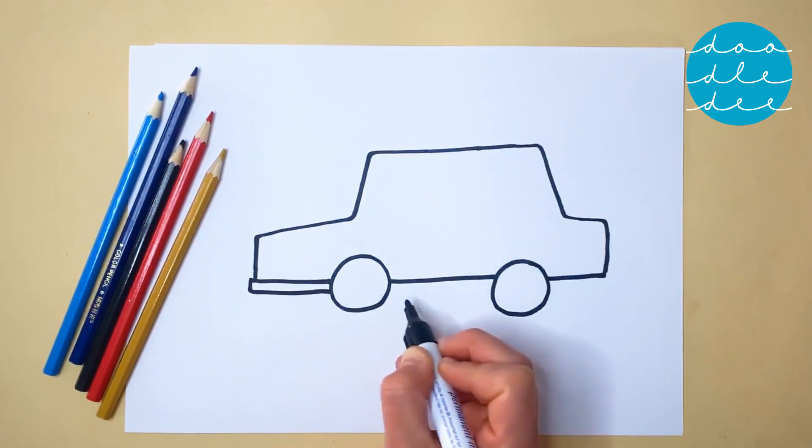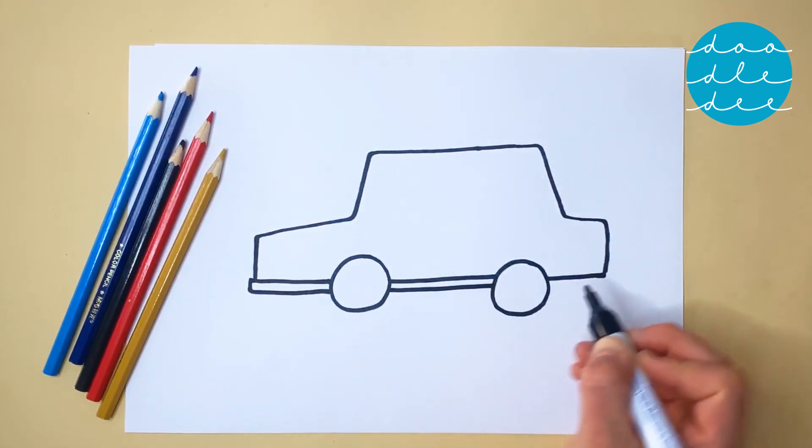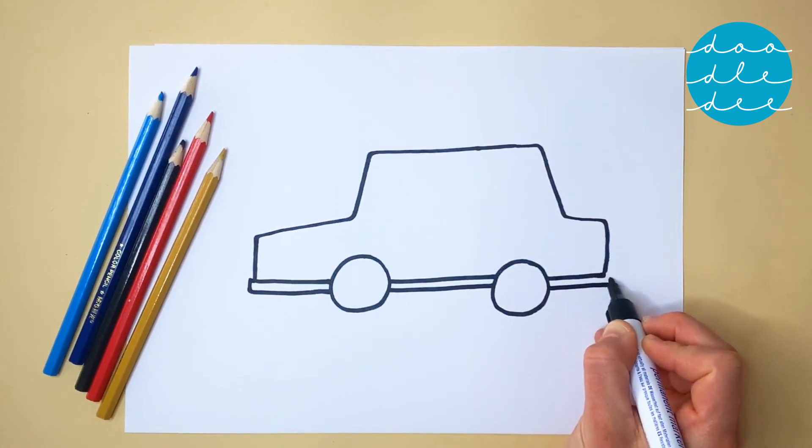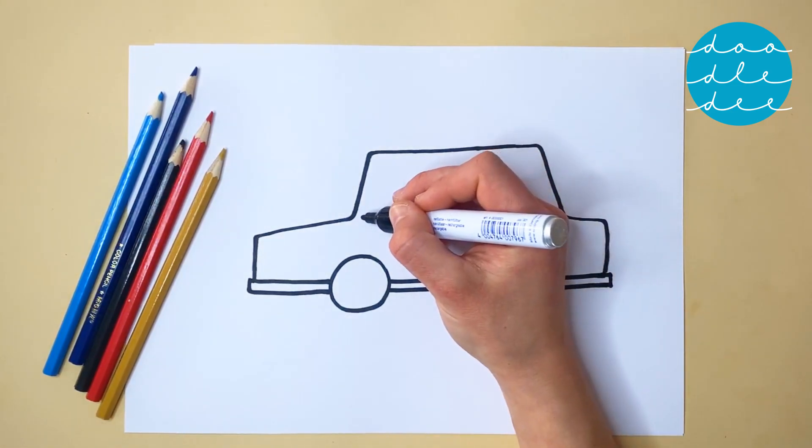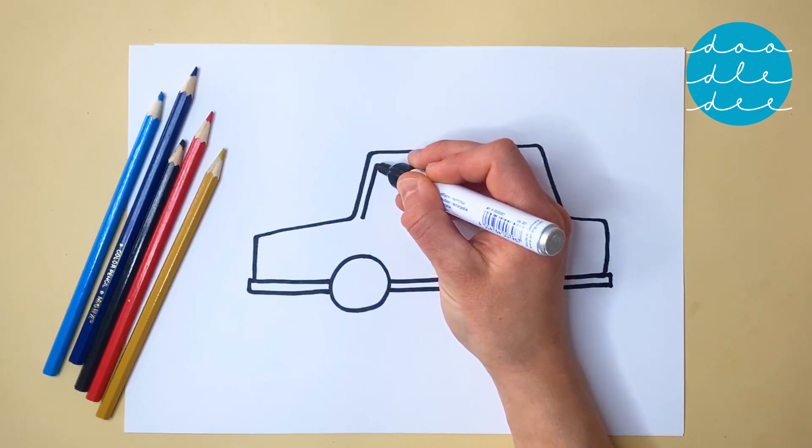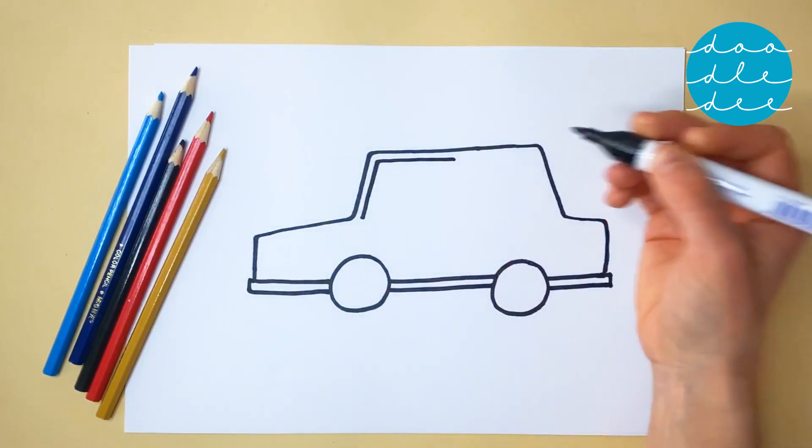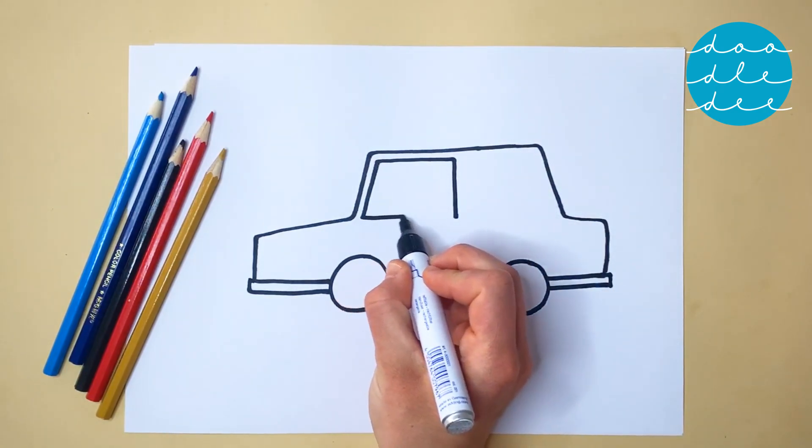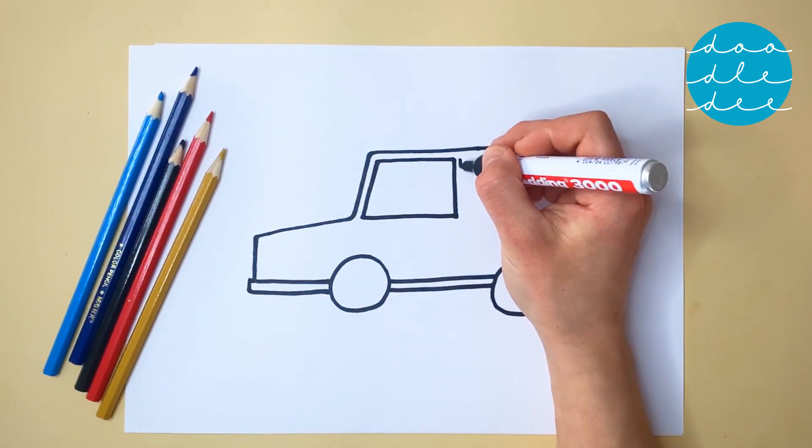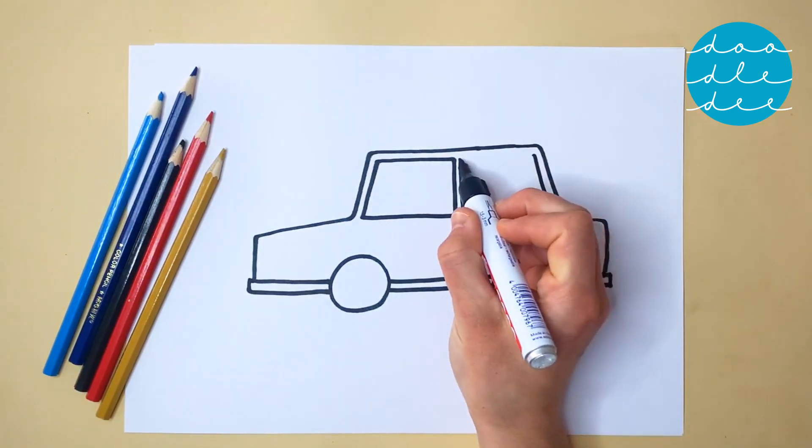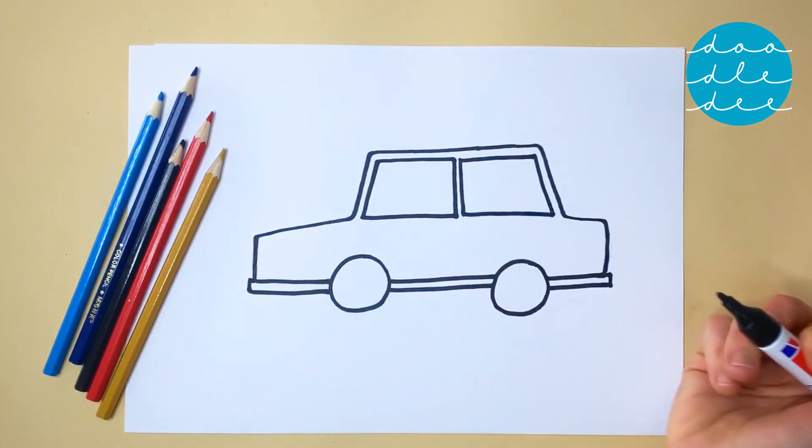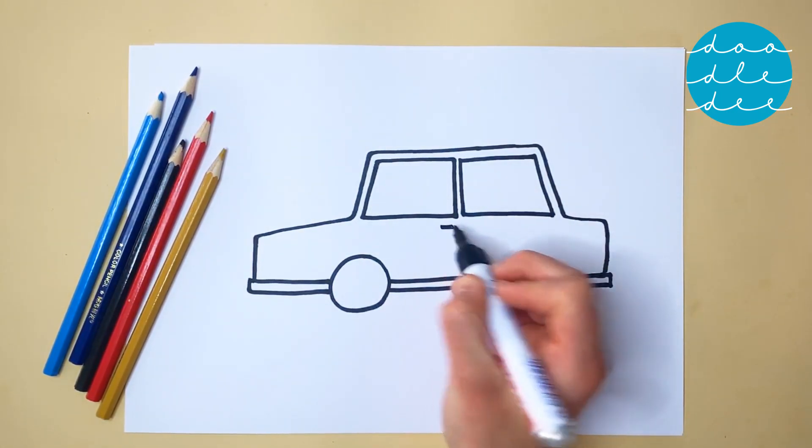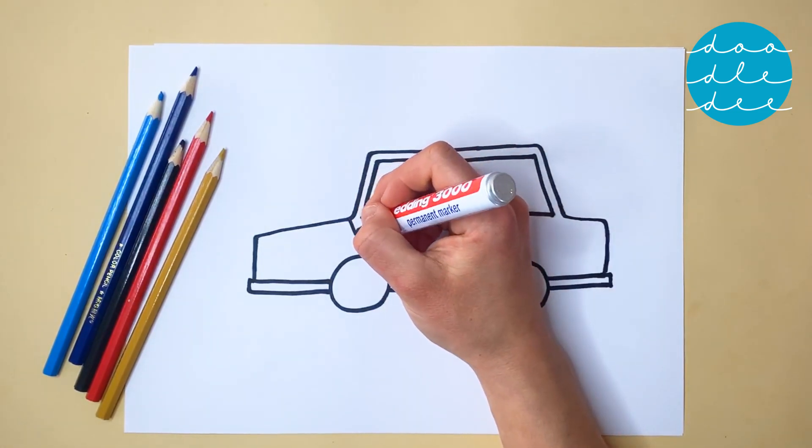Draw a second line all the way across to create the bumpers. Time for some windows so the police officers can see the road. One square window at the front, and one at the back. Add a handle, and two straight lines for some detail.